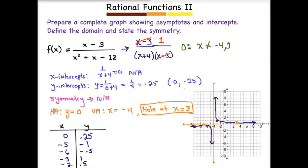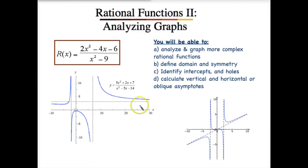That concludes our lesson today on graphing complex rational functions. At this point, you're able to analyze more complex rational functions — define their domain, test for symmetry, identify any intercepts as well as holes, and calculate vertical, horizontal, or oblique asymptotes.